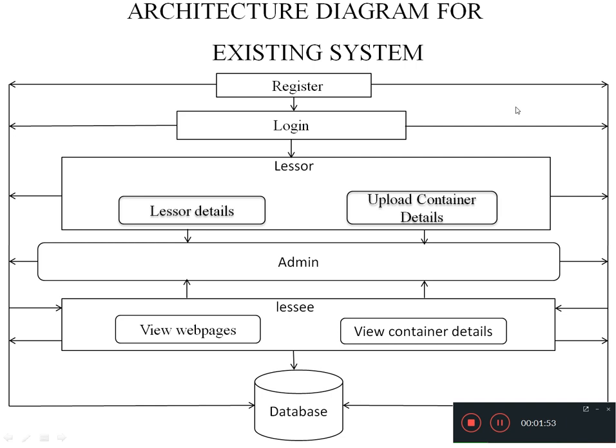This is the architecture diagram for the existing system. After registration and login, the lessee will be shown the lessee details, and with the approval of admin, they have to upload the container details which will be shown to the lessee. Similarly, the lessee after registration and login will be shown the web pages. They can view the container details only with the approval of the admin. All these details will be stored in the database, which is accessed and maintained by the admin, who is the authorized person.